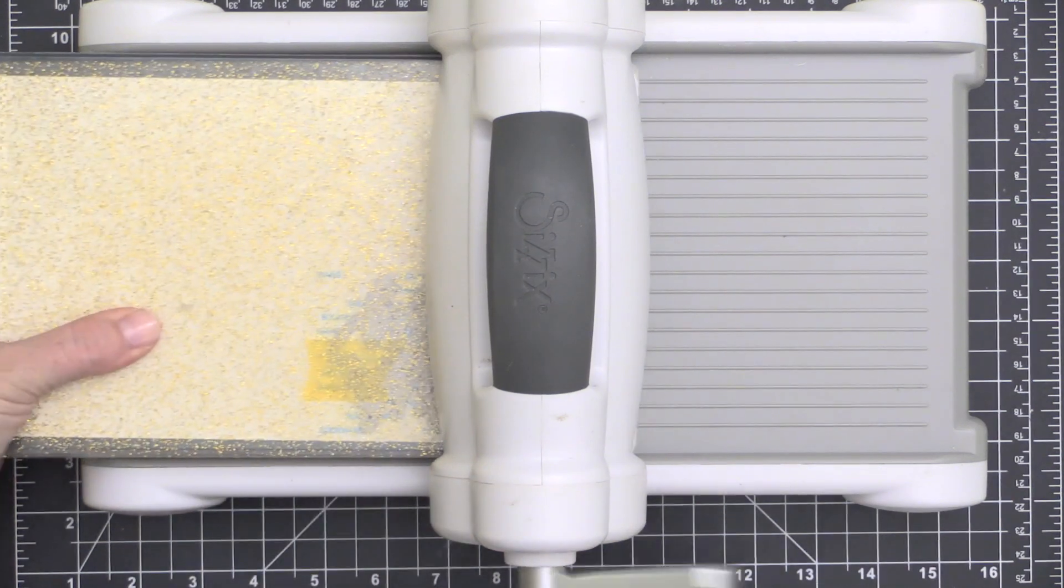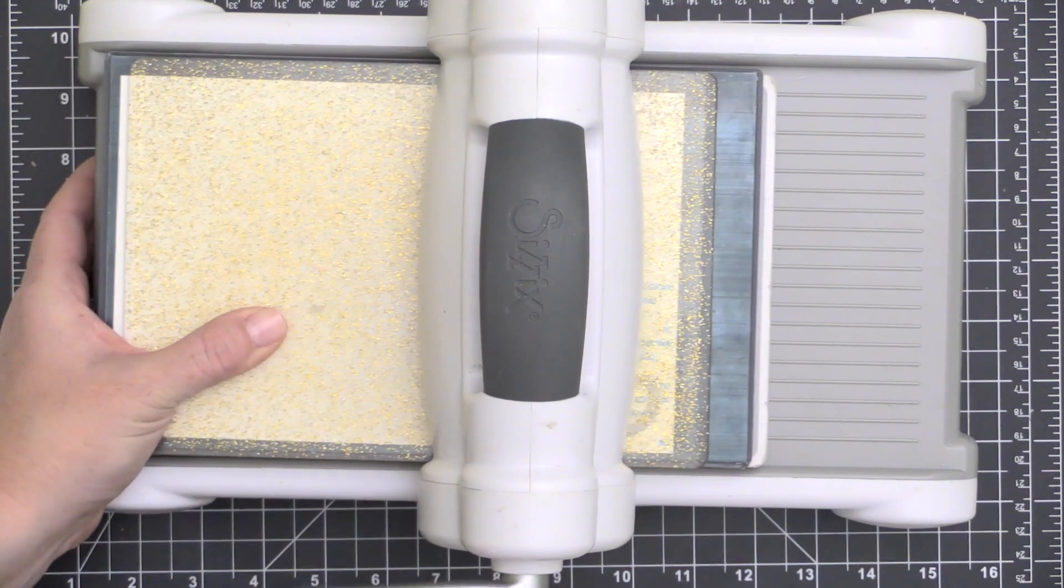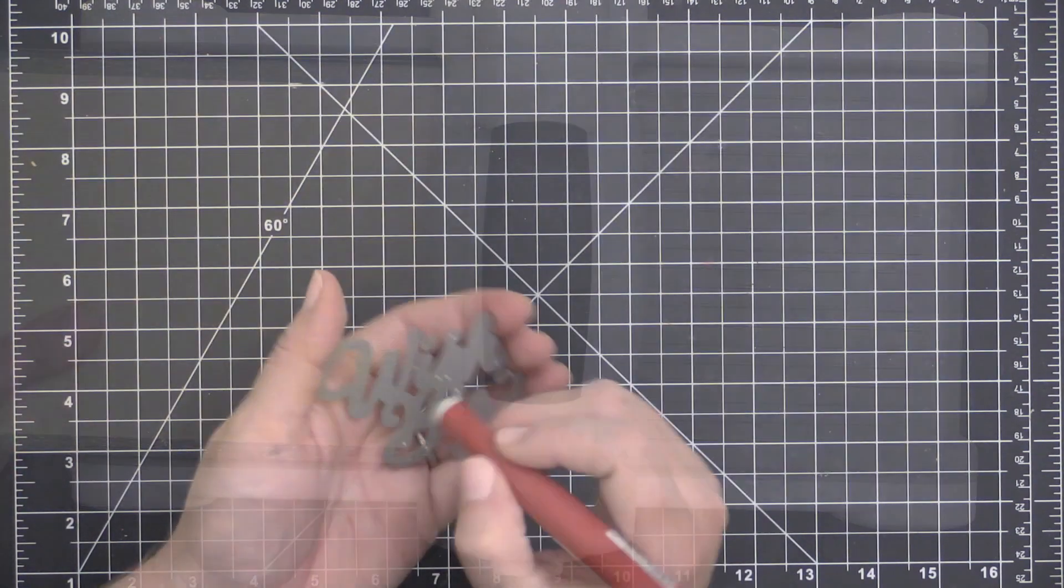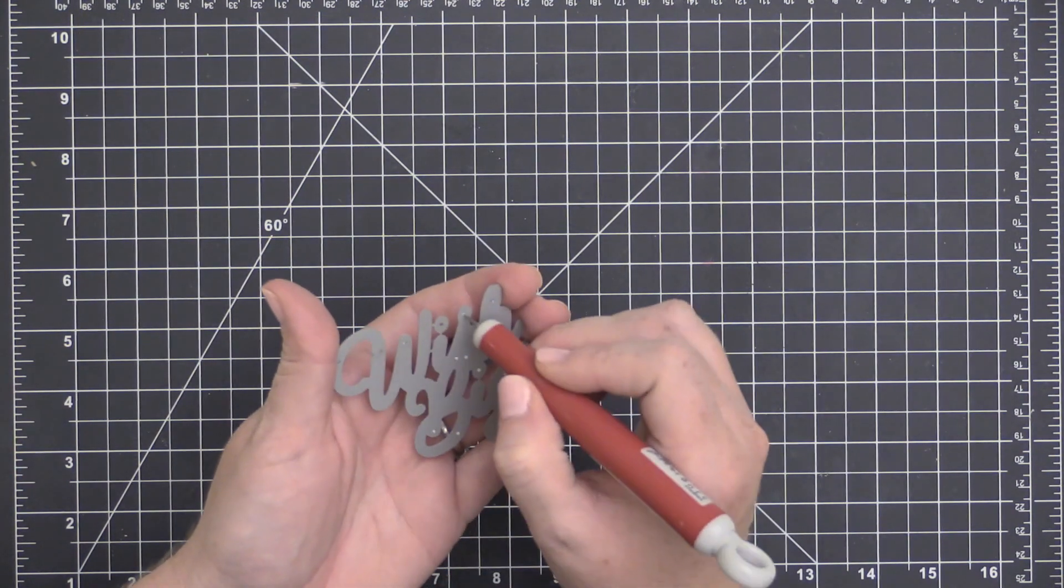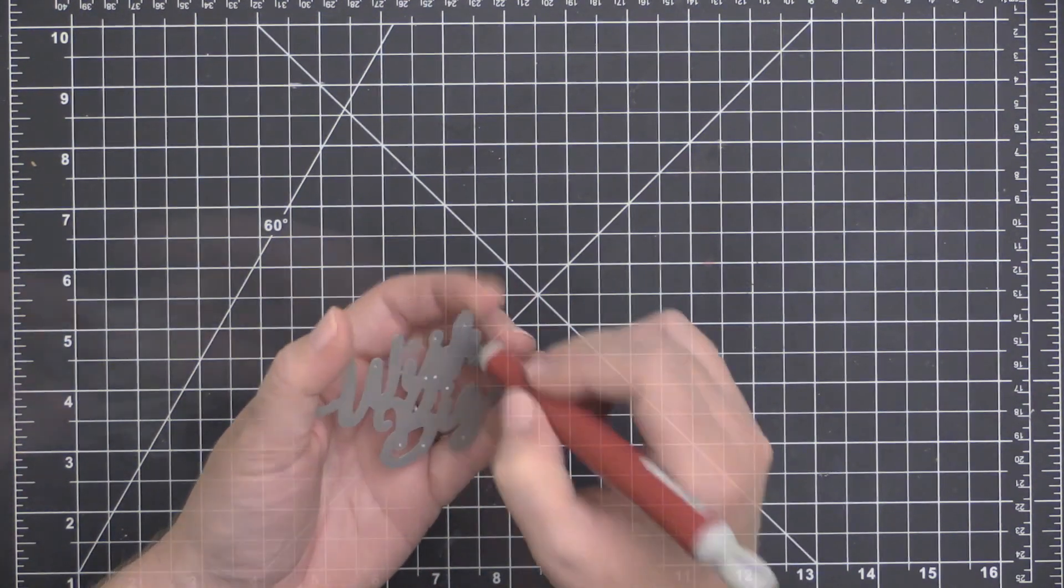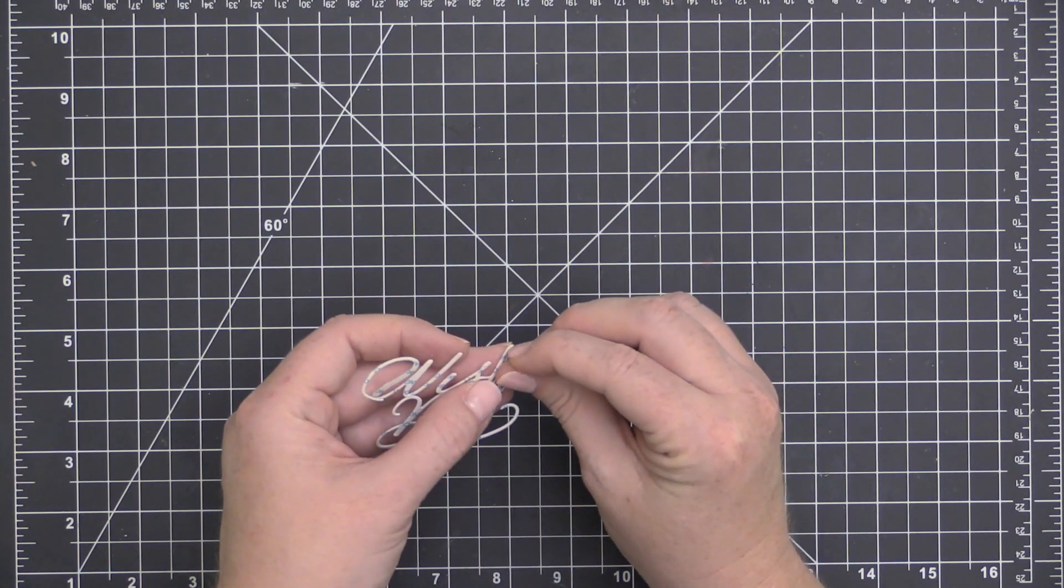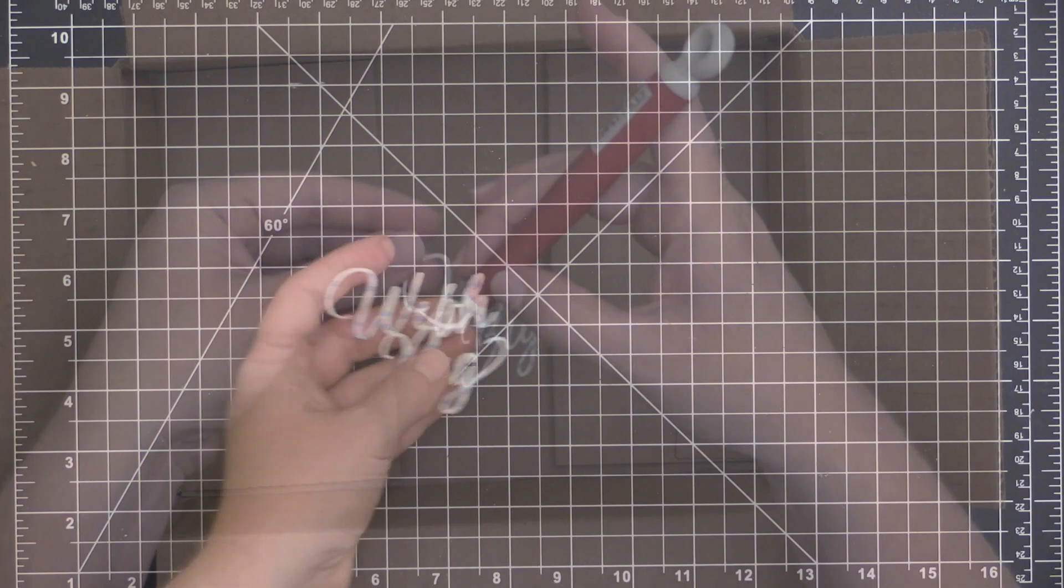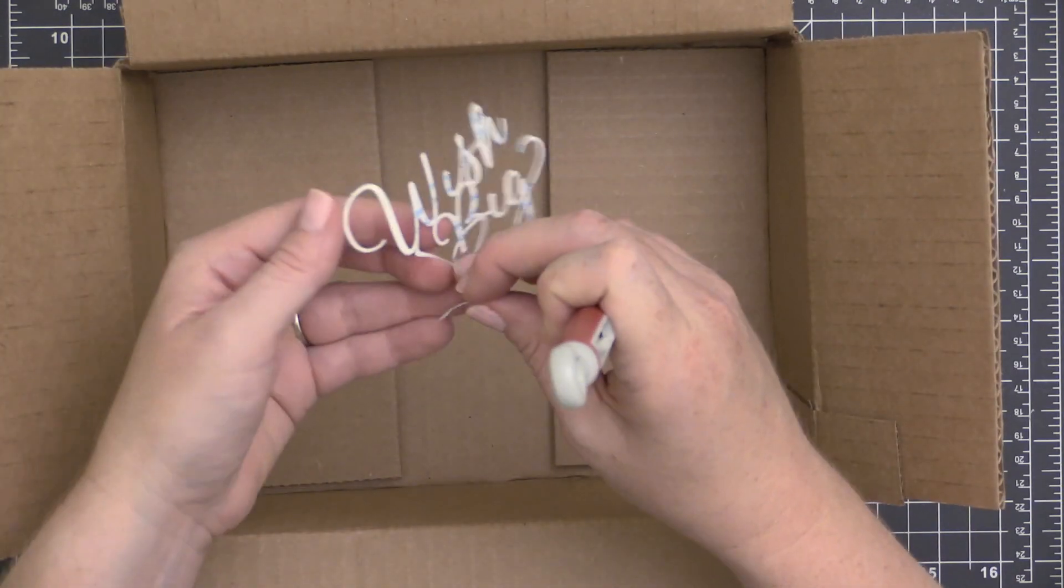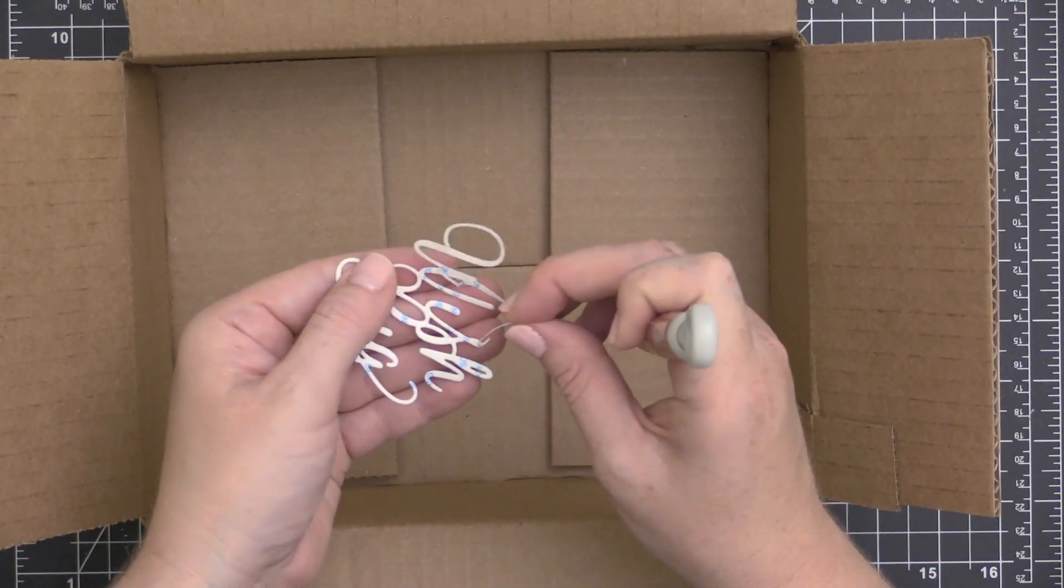But you can try whatever type of sheet adhesive you have, or try the double-sided tape and line that up all along your cardstock. And you can see, once I had that on there, I ran it through my die-cut machine with the adhesive side up because I want the adhesive on the front part of my cardstock. And I'm left with this intricate die-cut that has adhesive all over the front of it.